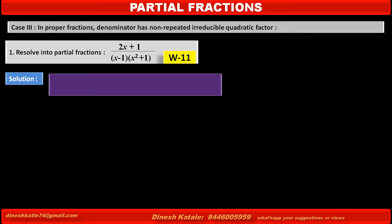So we write our first step as: let the given fraction (2x + 1) upon (x minus 1)(x squared plus 1) equal A upon (x minus 1) plus (Bx plus C) upon (x squared plus 1).